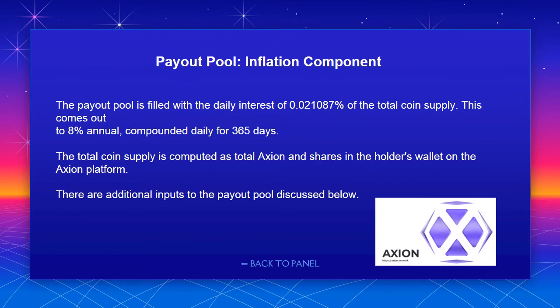Payout pool — inflation component: the payout pool is filled with the daily interest of 0.021087% of the total coin supply, which comes out to 8% annual compounded daily for 365 days. The total coin supply is computed as total Axion and shares in the holders' wallets on the Axion platform. There are additional inputs to the payout pool discussed below.